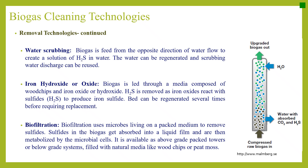Iron hydroxide or oxide: biogas is led through a media composed of wood chips and iron oxide or hydroxide. H2S is removed as iron oxides react with sulphides to produce iron sulphide, and the media can be regenerated several times before requiring replacement. Biofiltration uses microbes living on a packed medium to remove sulphides; sulphides in biogas get absorbed into a liquid film and are metabolized by microbial cells. It is available as above-ground packed towers or below-grade systems filled with natural media like wood chips or peat moss.